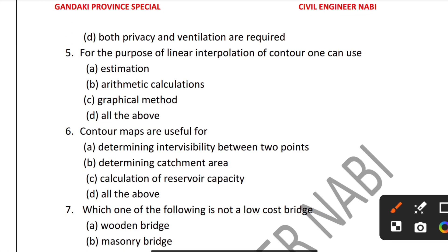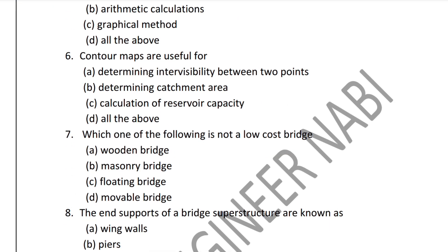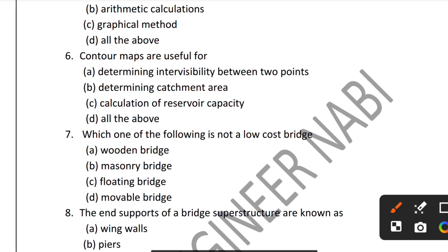Question 6: Contour maps are useful for which of the following? Options include: determining intervisibility between two points, determining catchment area, calculation of reservoir capacity, or all of the above. The correct answer is all of the above.